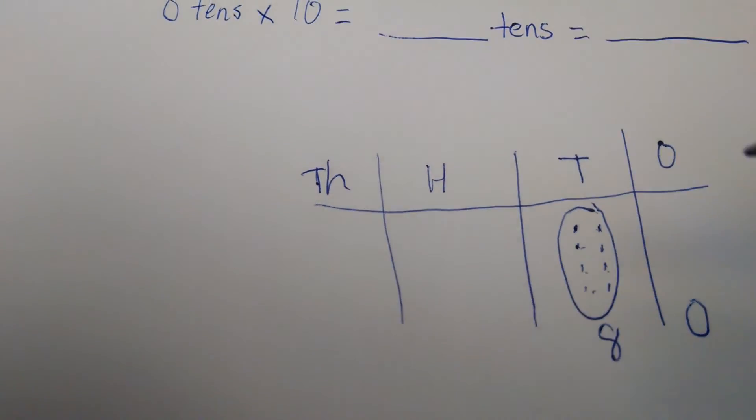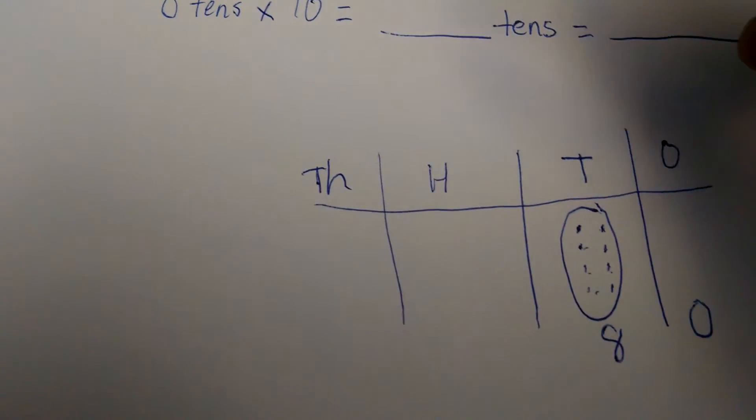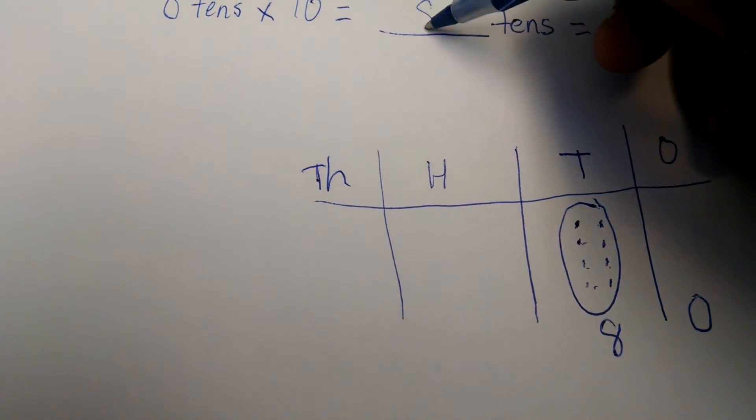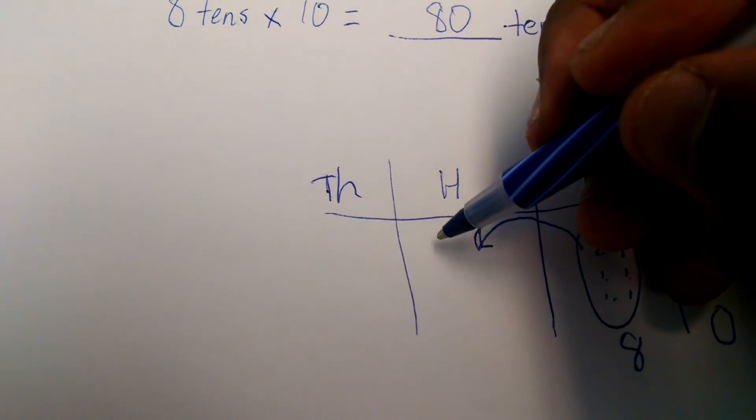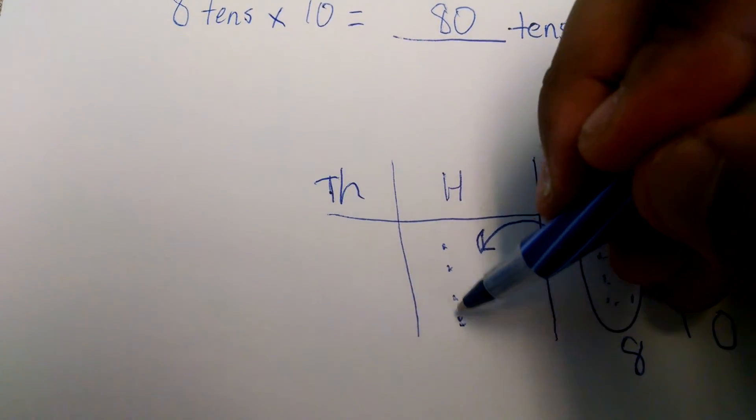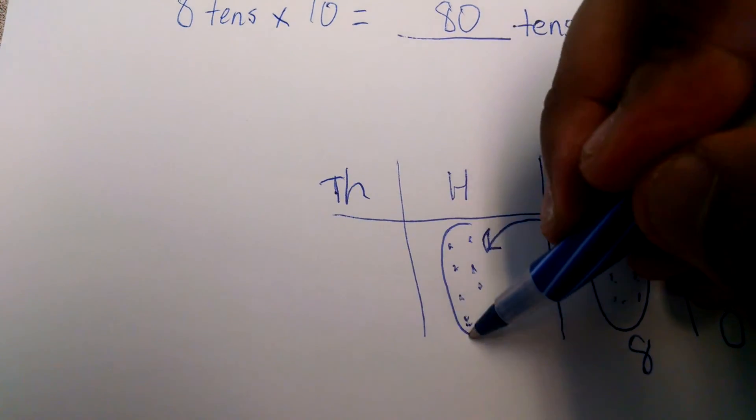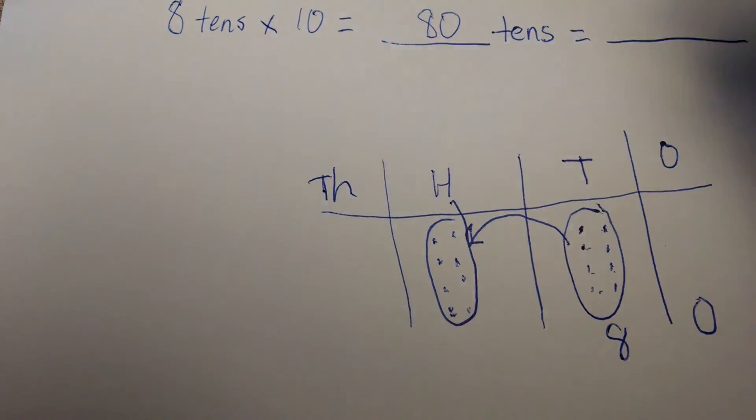So now I have 80 tens, which is equivalent to 8 hundreds. And I write the word 'hundreds' in word form to show the unit I'm working with.